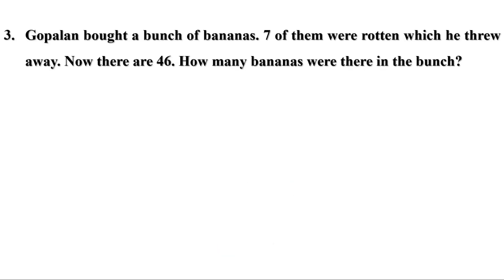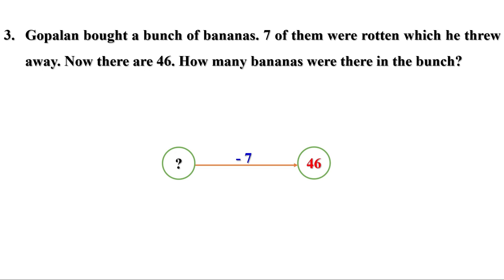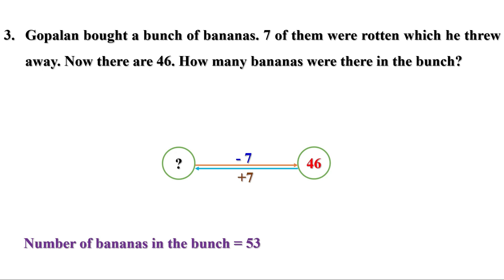Third problem: Gopalan bought a bunch of bananas. Seven of them were rotten, which he threw away. Now there are 46. How many bananas were there in the bunch? We don't know the number of bananas. But he threw away 7 bananas — that is, 7 subtracted — and the number is 46. To get the total, 7 is subtracted and it is 46, so do the reverse: add 7 to it. The number of bananas in the bunch is 53. When 7 is taken from 53, it is 46.